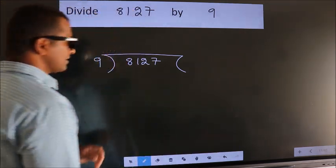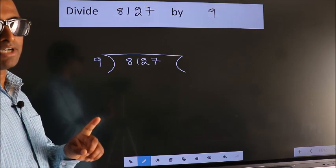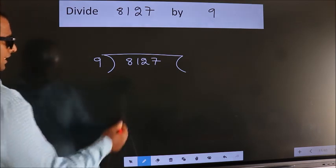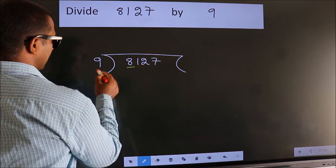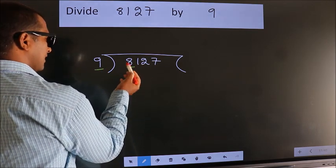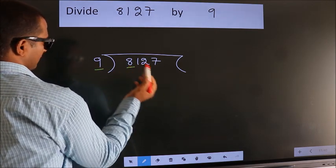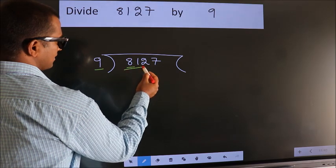This is your step 1. Next, here we have 8, here 9. 8 is smaller than 9, so we should take two numbers: 81.